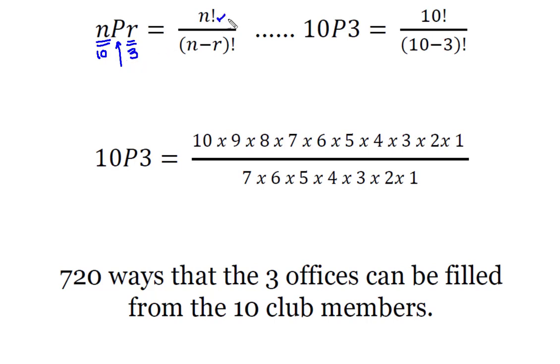When we look at the permutation formula, we say out of the number we have, which in our case was 10, we are going to position a required number of items, which was three. And so, here are your factorials. It's n factorial divided by n minus r factorial. When we apply it to our question, that becomes 10 permutation or position three.